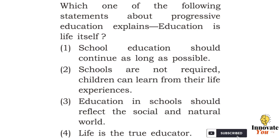Option 1 is wrong because after a certain period of time we cannot continue school education. Option 2 is wrong because it states schools are not required and whatever a child learns in real life is all that is needed. Option 3 states that school should teach social values and things happening in nature. Option 4, 'life is the true educator,' is just a statement. The correct answer is option 3: education in schools should reflect the social and natural world.